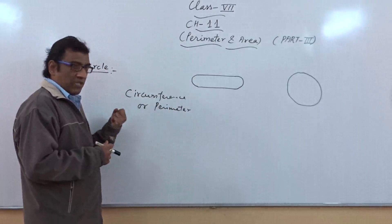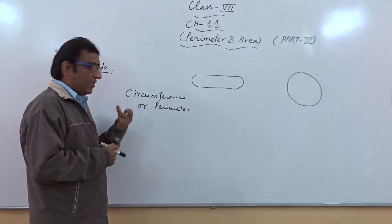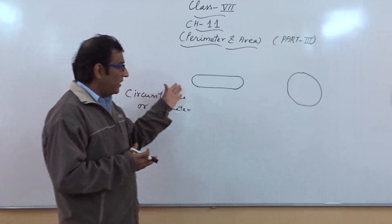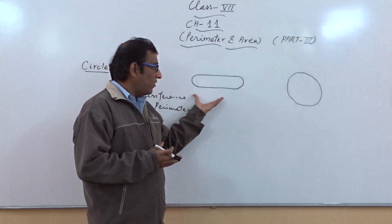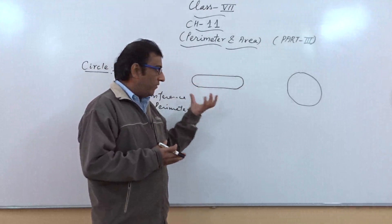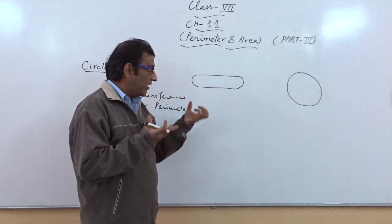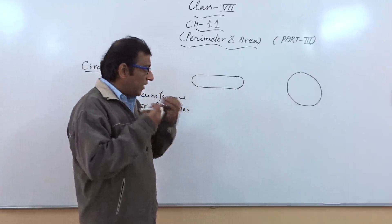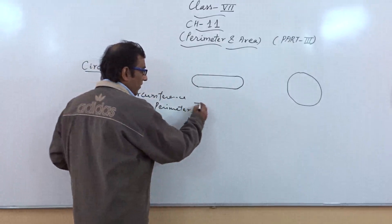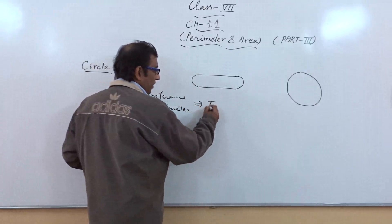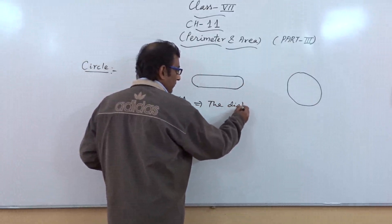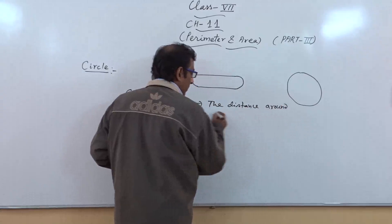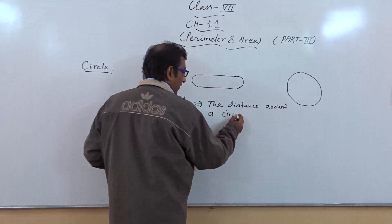So basically what is circumference? What is the perimeter of these types of figures or circle? Basically it is the distance around a circular region. If we want to calculate the perimeter or circumference of these types of figures, we will go with this definition: the distance around a circular region.